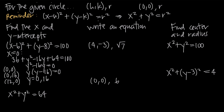For this simpler equation, we already know the center is (0, 0) because it's in the form x squared plus y squared equals r squared. Matching the equation x squared plus y squared equals 64 to this formula, we take the square root of 64, which is 8, so the radius is 8. Since the center is at the origin and the radius is 8, the x-intercepts are (8, 0) and (negative 8, 0), and the y-intercepts are (0, 8) and (0, negative 8).